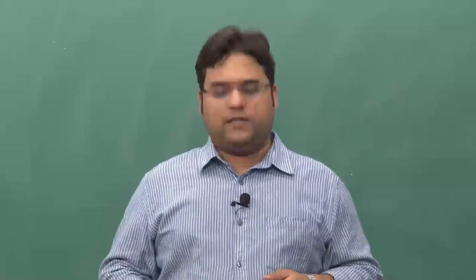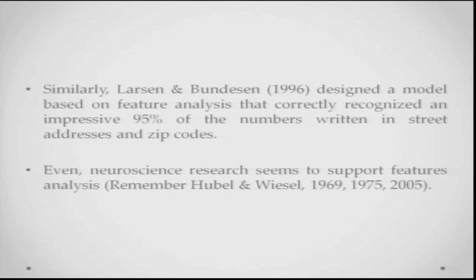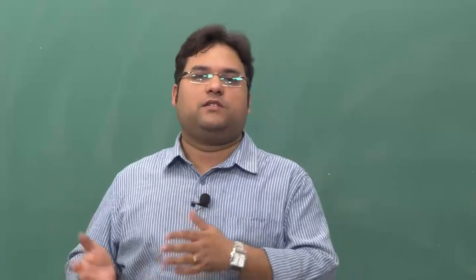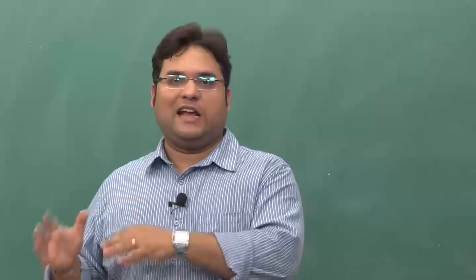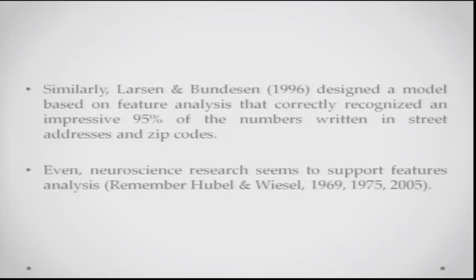This is what feature analysis theory says about recognizing patterns. Larson and Bunderson designed a model based on feature analysis that correctly recognized approximately 95% of numbers written in street addresses and zip codes. Neuroscience research by Hubel and Wiesel showed that neurons can be tuned to recognize orientation — horizontal, slanted, or vertical lines. These neurons code for specific features, providing neuroscience support for feature analysis theory.